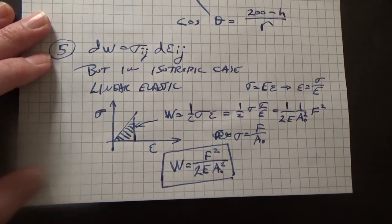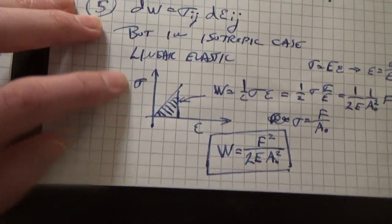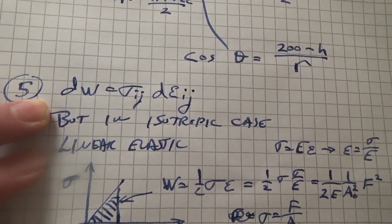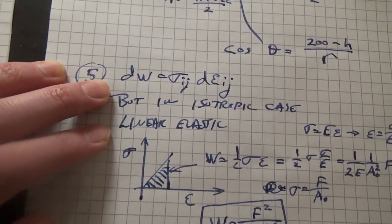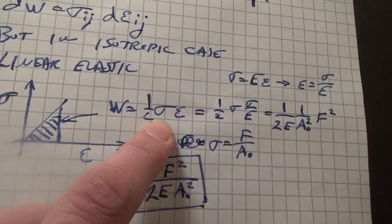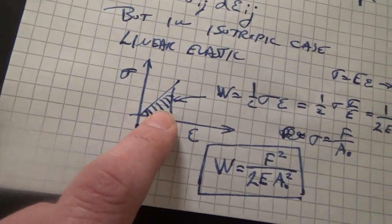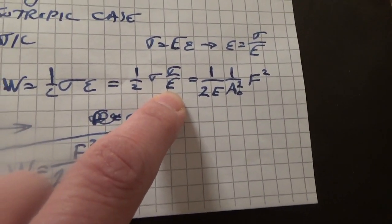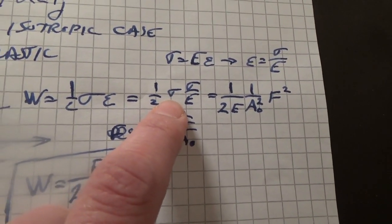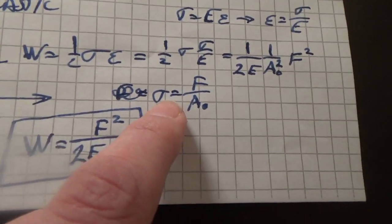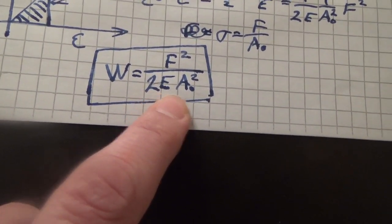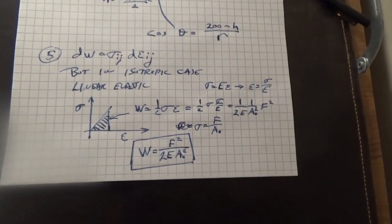And the last problem, I just wanted a simple linear elastic solution. We know that the energy density is dW equals sigma ij d epsilon ij and you would integrate this. But we're just thinking about the simple isotropic linear elastic case in which you've got stress and strain. So the work is one-half stress times strain, that little triangle. And that gives us one-half stress times stress over Young's modulus because we know the relationship between stress and strain. And then we know the relationship between force and cross-sectional area. So we know stress is equal to force over area. So the work is going to be f squared over 2 E A naught squared. And that's the solution to problem five.